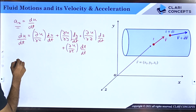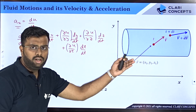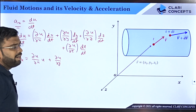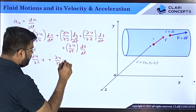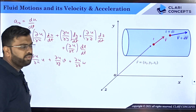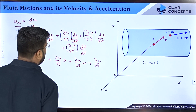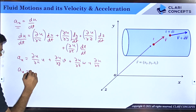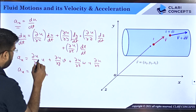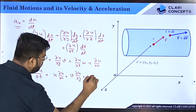If I divide both sides by dt, I get du/dt = (∂u/∂x)(dx/dt) + (∂u/∂y)(dy/dt) + (∂u/∂z)(dz/dt) + ∂u/∂t. Now dx/dt is the velocity component u itself, dy/dt is v, and dz/dt is w. So ax = du/dt = u(∂u/∂x) + v(∂u/∂y) + w(∂u/∂z) + ∂u/∂t.